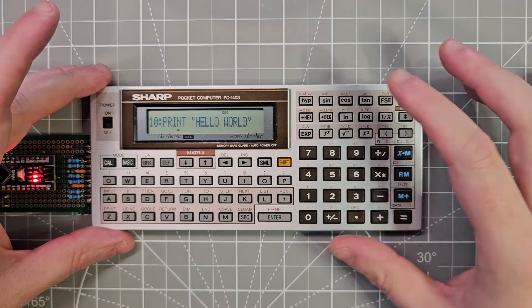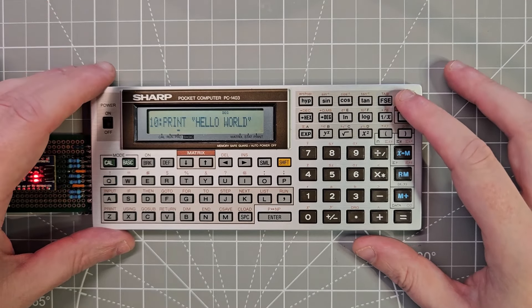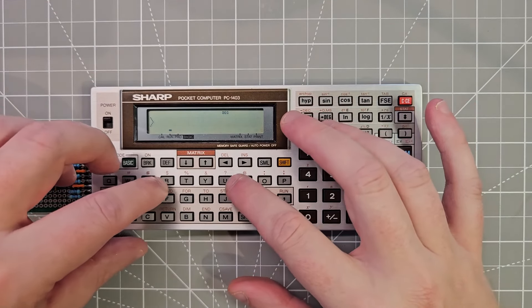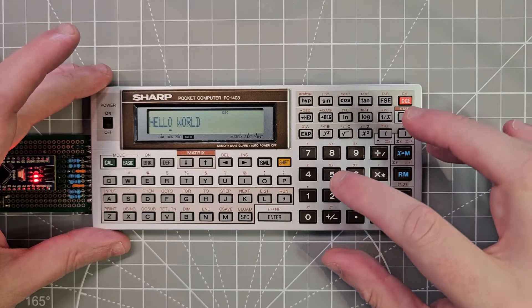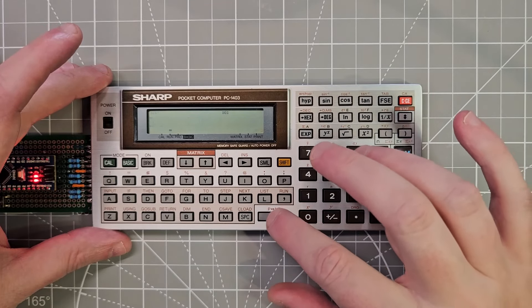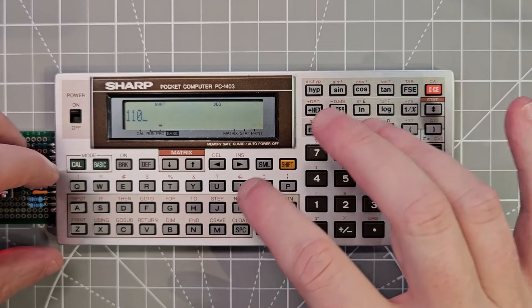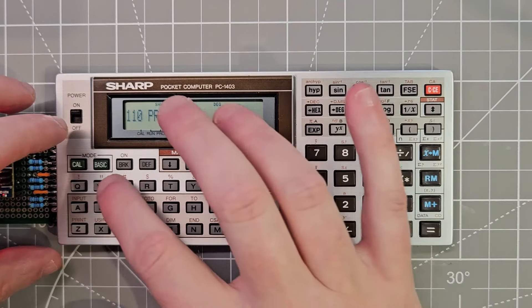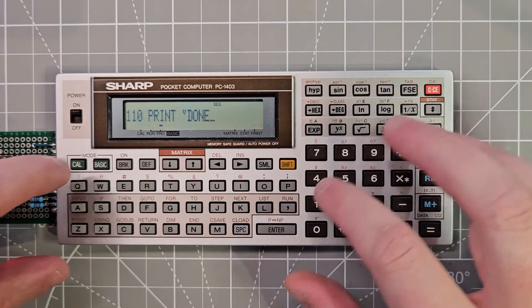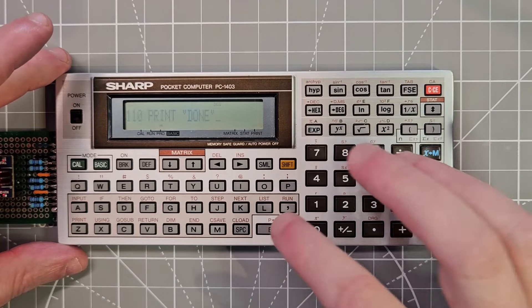So we have that and we can run it and make sure that it runs and it's good. And we can edit this program. One 10 print done. So we've added this line to the program.